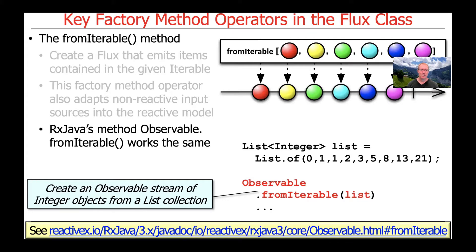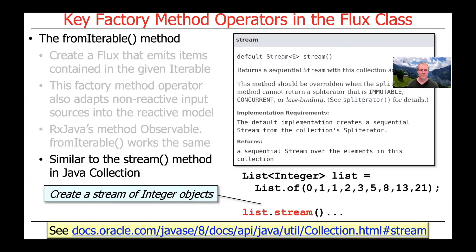RxJava also has a fromIterable method that works exactly the same way. We have the same example from the previous slide, except now we're using Observable instead of Flux, and we create an Observable stream that will emit the elements that are part of that Java List. There's also another equivalence in Java Streams — you can say list.stream(), which is the canonical way of creating sequential streams, very similar to fromIterable in both RxJava and Project Reactor.